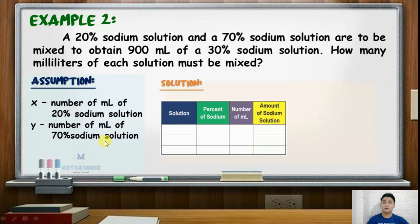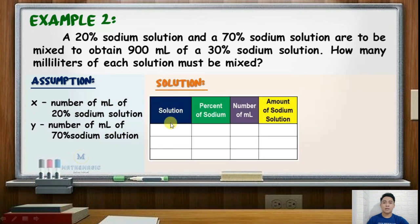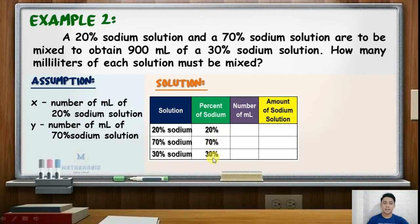Next, we will construct a table of values. Column 1 will be for the sodium solution: 20% sodium solution, 70% sodium solution, and 30% sodium solution. The second column will be for the percent of sodium. For the third column, we will write the number of milliliters: X for 20%, Y for 70%, and X plus Y for 30%, since we are combining the two solutions.